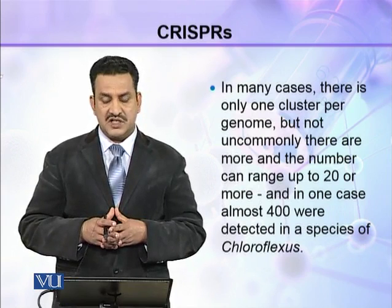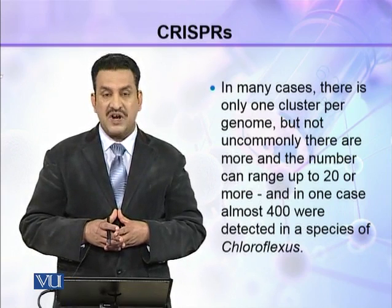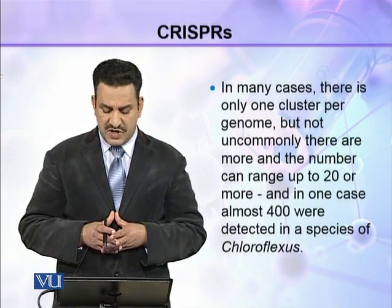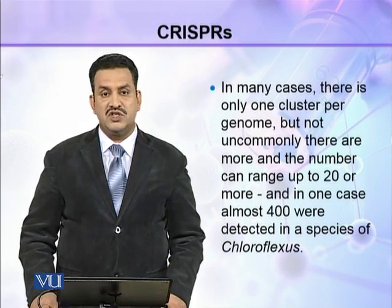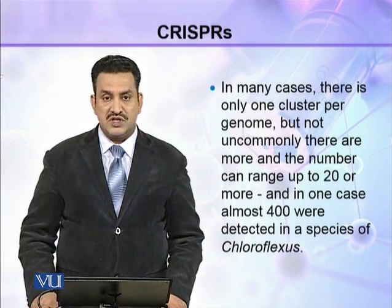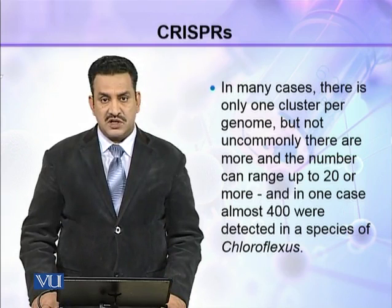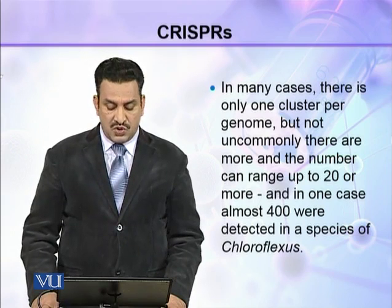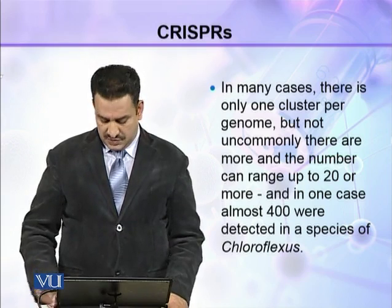In many cases there is only one cluster per genome, but not uncommonly there are more, and the number can range up to 20 or even more. For example, in one case almost 400 such sequences were detected in a species of Chloroflexi.